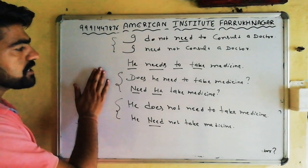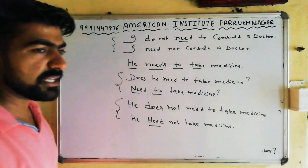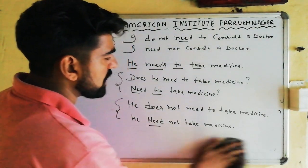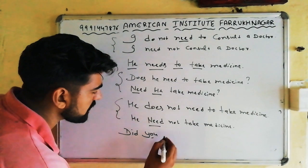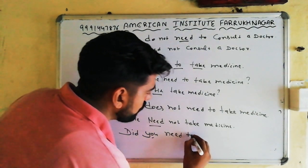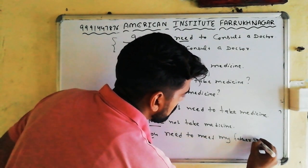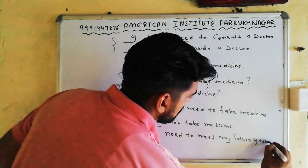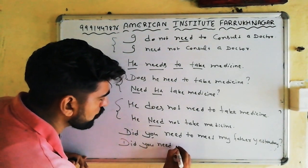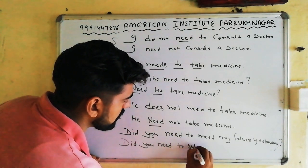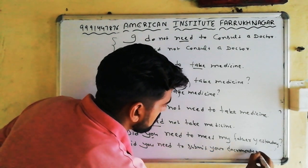So friends, interrogative और negative में दो-दो तरीके हैं, positive में एक। अब एक बहुत important बात — जब इसको past में use करना है main verb के रूप में, तो: Did you need to...? क्या आपको जरूरत थी — Did you need to meet my father yesterday? क्या आपको कल documents submit करने की जरूरत थी — Did you need to submit your documents yesterday?